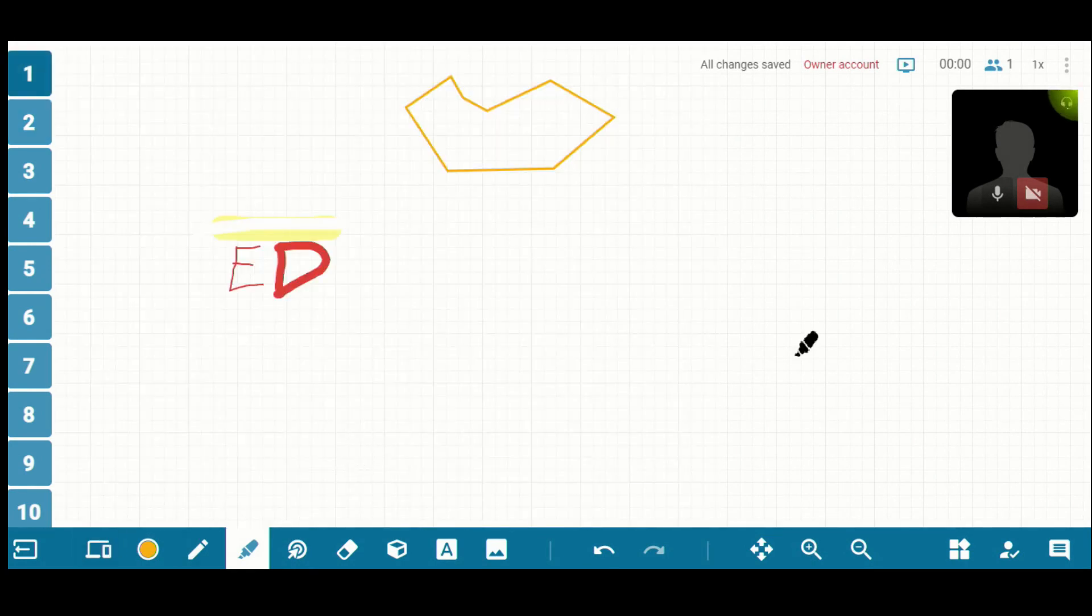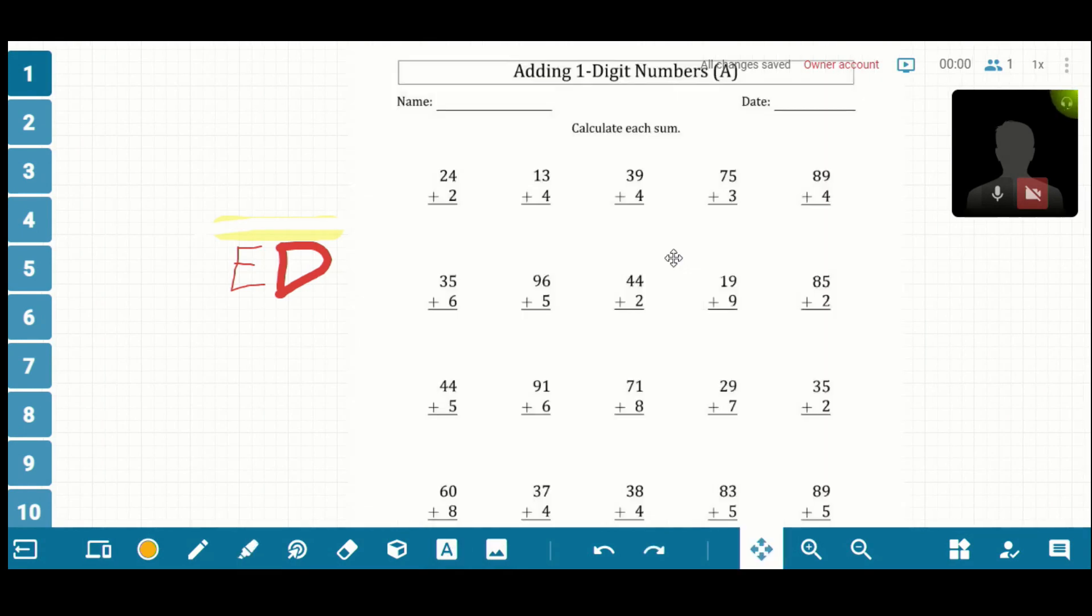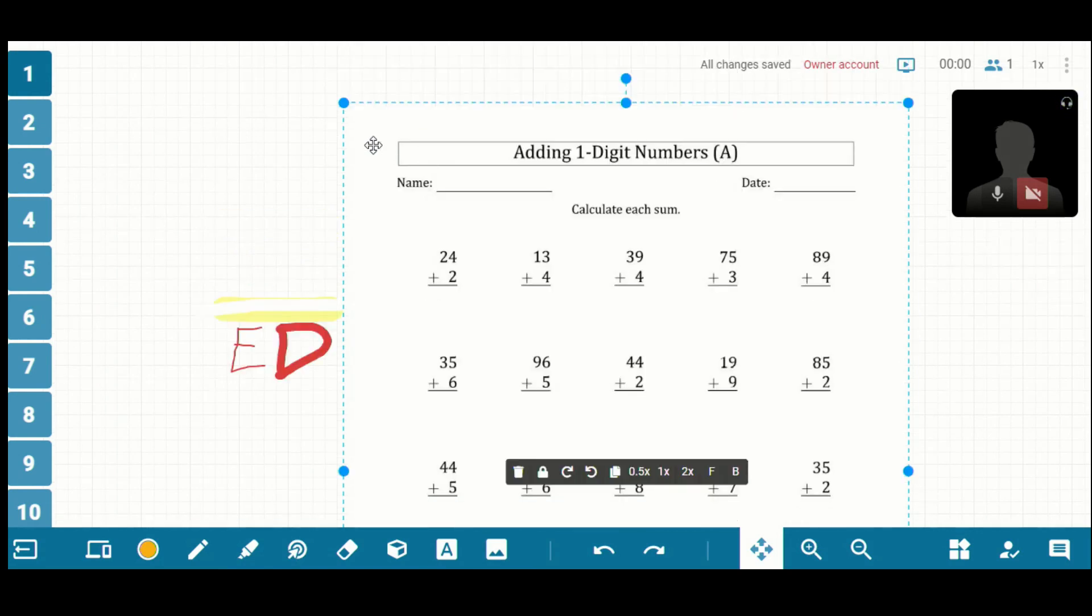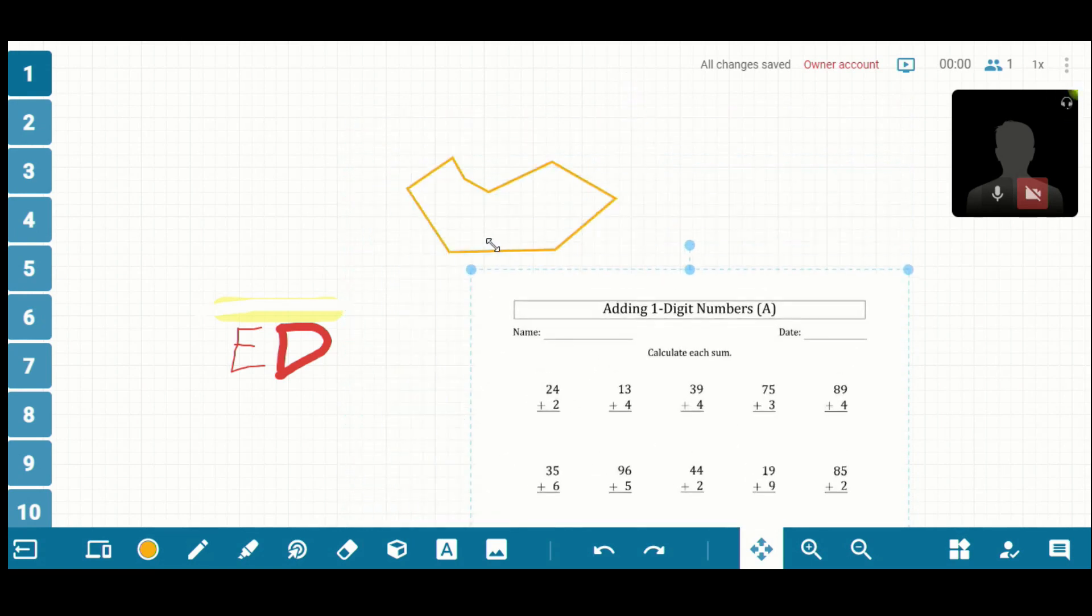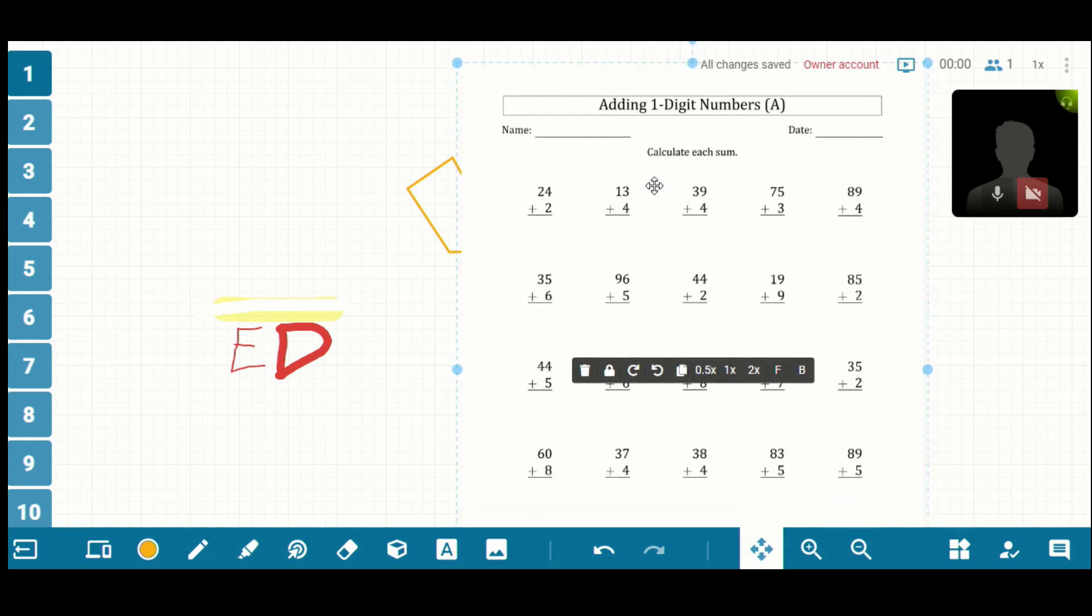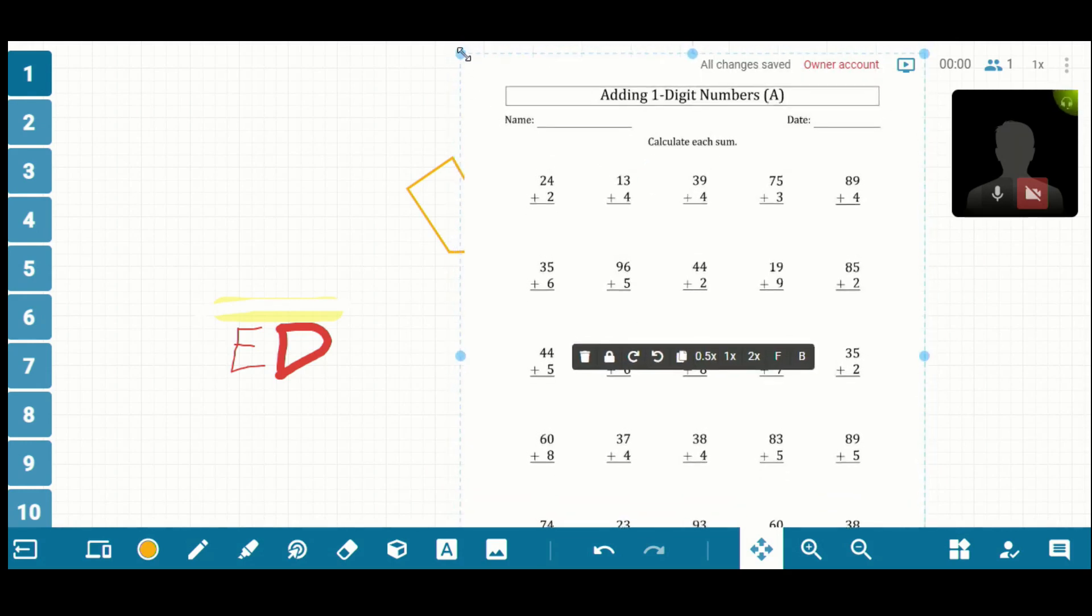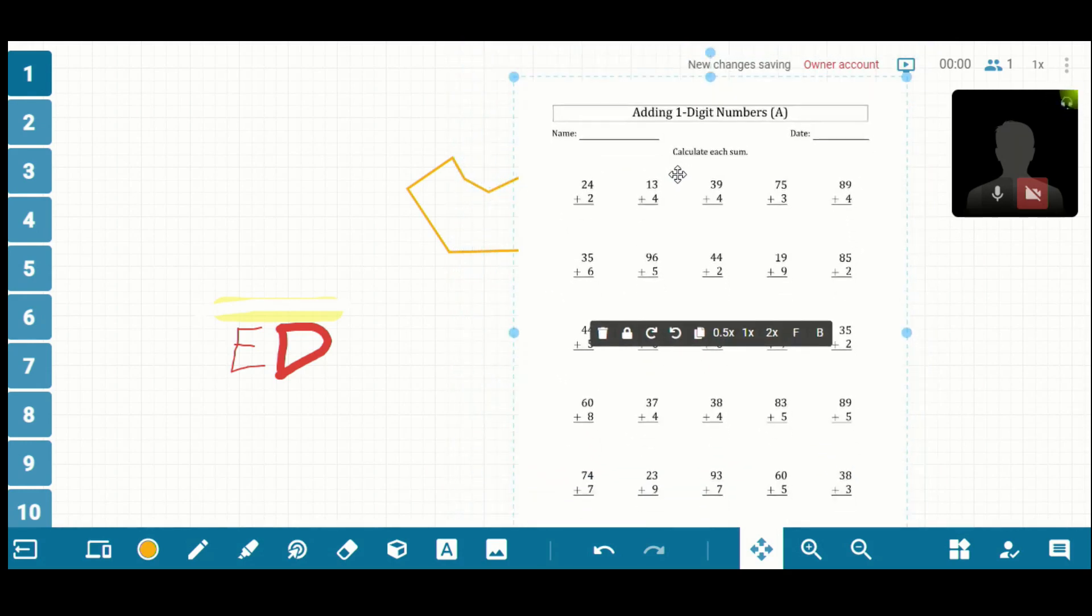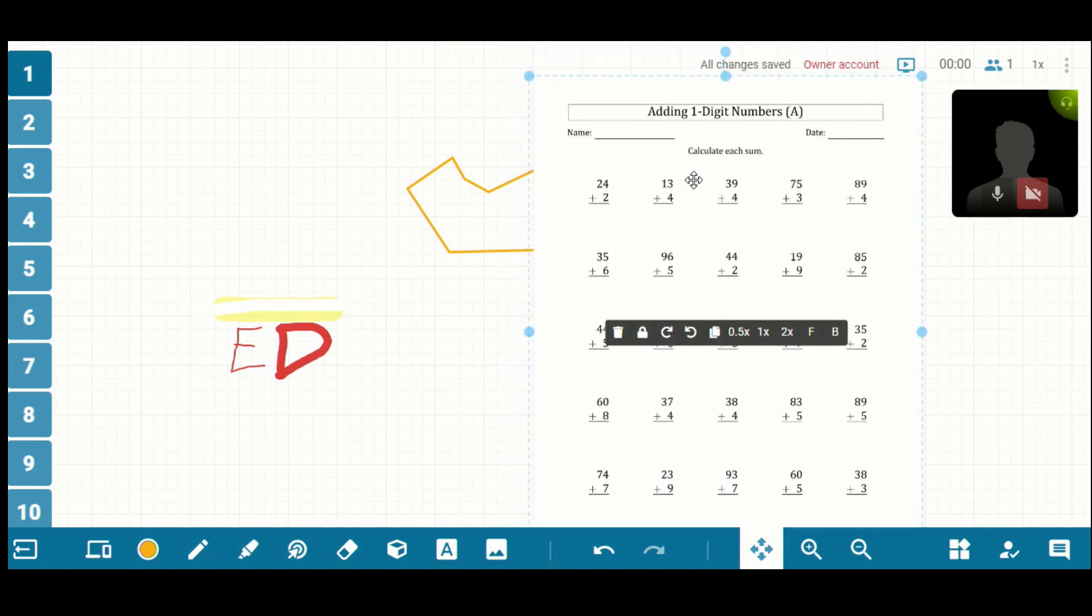So we're just going to come back to our first screen, and I'm just going to insert a PDF worksheet. Okay, so I just inserted a math worksheet. And I'm going to shrink this down just so it all fits on one page. So if you hold down the control button and click on a corner, it will maintain the aspect ratio so you don't have to worry about it getting distorted. So we'll just shrink this down a little bit so that the students can see everything on one page.